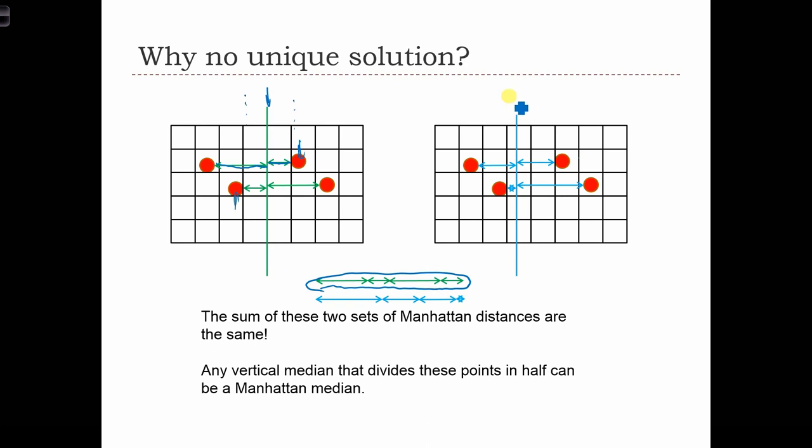And I've done the same for this Manhattan median that we select, which is still in that range of feasible locations for the median. And I've calculated the lengths of all the distances to that line and rearranged them in here.